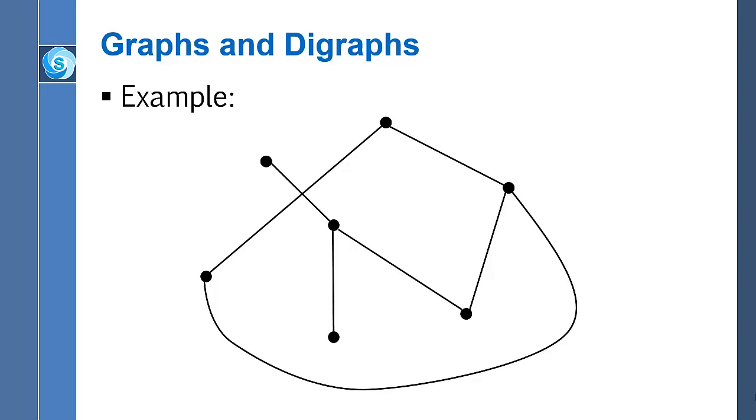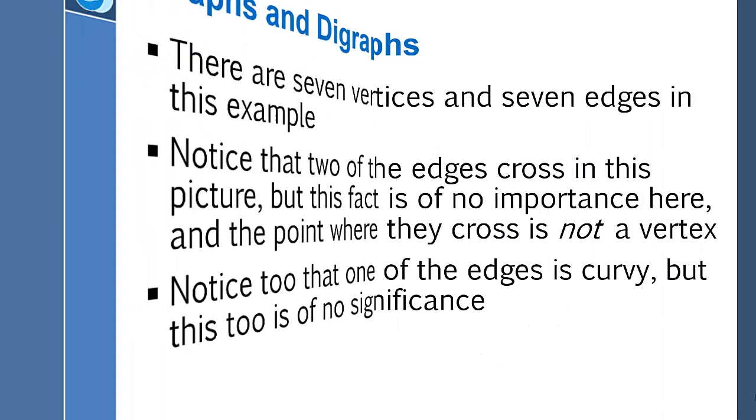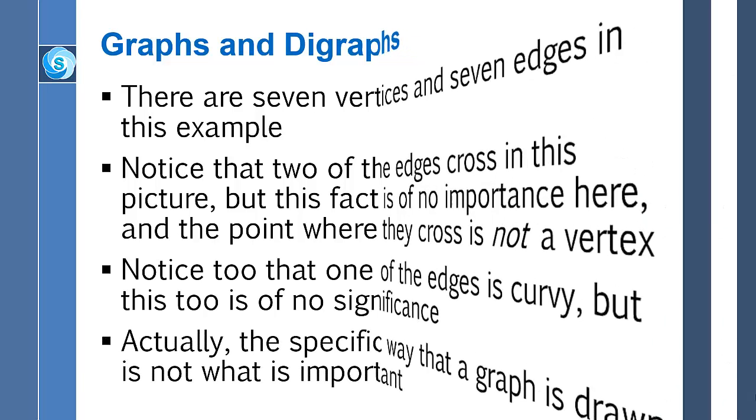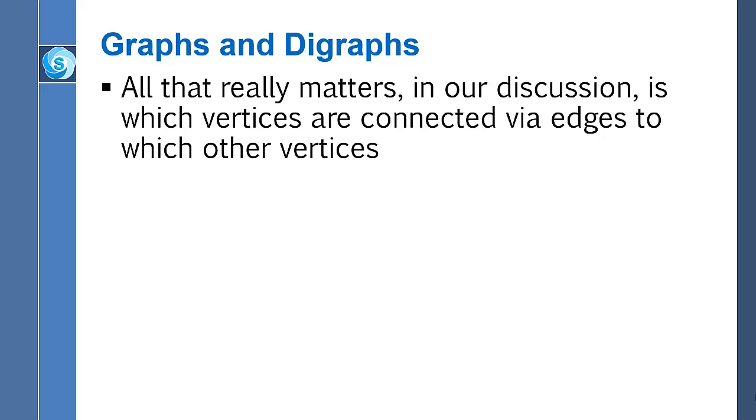This particular graph could be redrawn in several ways. Notice that we have two edges that cross in this picture. They do not meet at a vertex. They are just crossing. And the fact that they're crossing in this picture is completely irrelevant for our purposes. Also notice that one of the edges I drew was kind of curvy. That also is irrelevant. All that matters is how many vertices, how many edges, and which pairs of vertices are connected by edges.